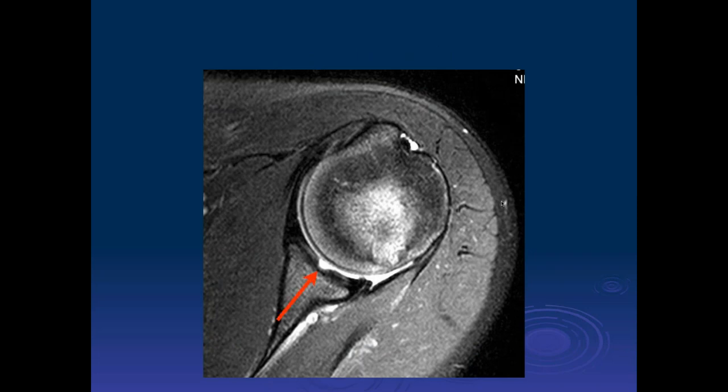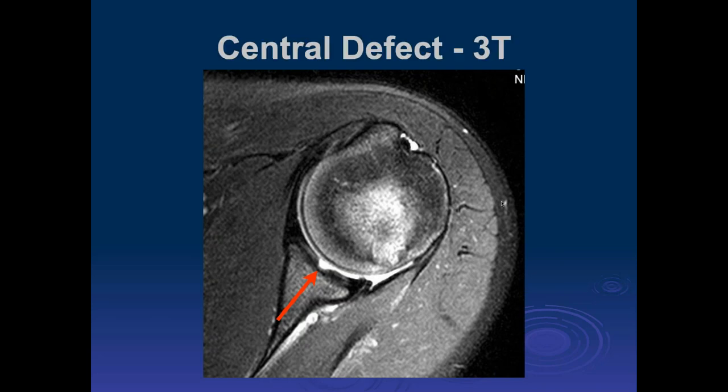Occasionally you can get a defect in the central part of the glenoid, which can be a congenital abnormality — often just called a central defect. If it's nice and smooth with no bony reactive changes and no degenerative disease within the joint space, it's a normal variant, similar to what you can see in the acetabulum.